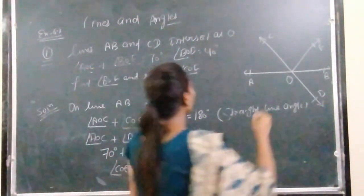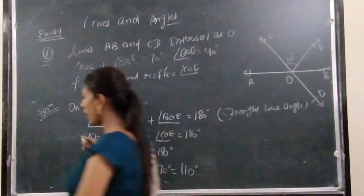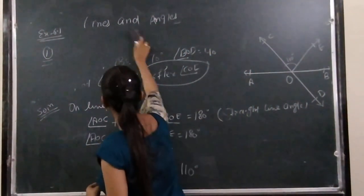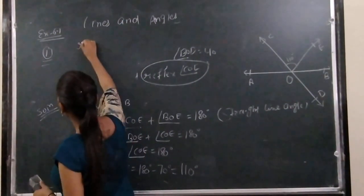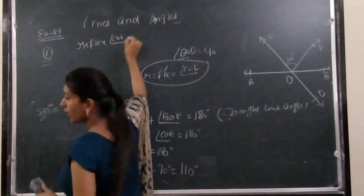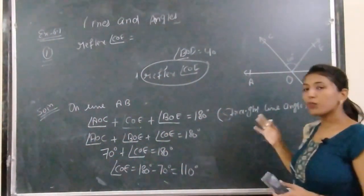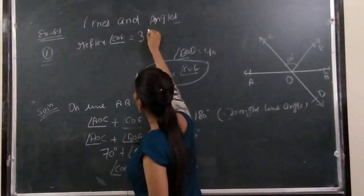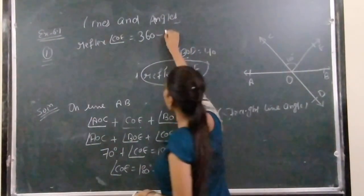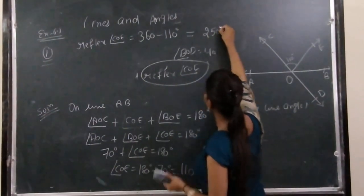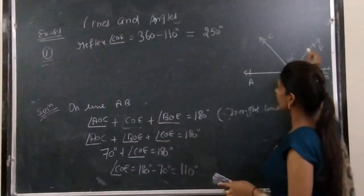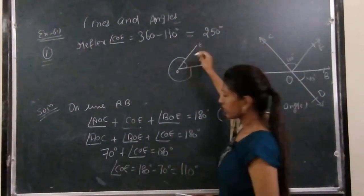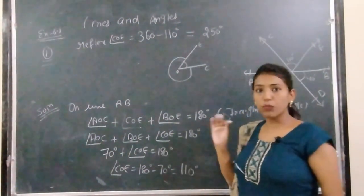Angle COE is 110 degrees. Now we have to find the reflex of angle COE. A reflex angle is one which is greater than 180 degrees and less than 360 degrees. To find the reflex of COE, we subtract 110 from 360 degrees. The reflex angle is the outer side, which lies between 180 and 360 degrees.